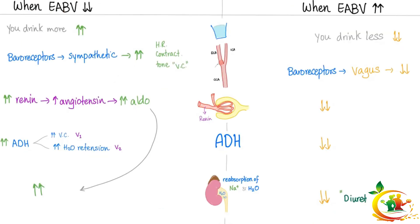In summary: when effective arterial blood volume is low, everything compensatory goes high — you drink more water, baroreceptors fire sympathetically to increase heart rate, contractility, and vessel tone; the renin-angiotensin-aldosterone system is activated; ADH is high; and salt and water reabsorption by the kidney increases. On the other hand, when effective arterial blood volume is high, all of these mechanisms are suppressed.